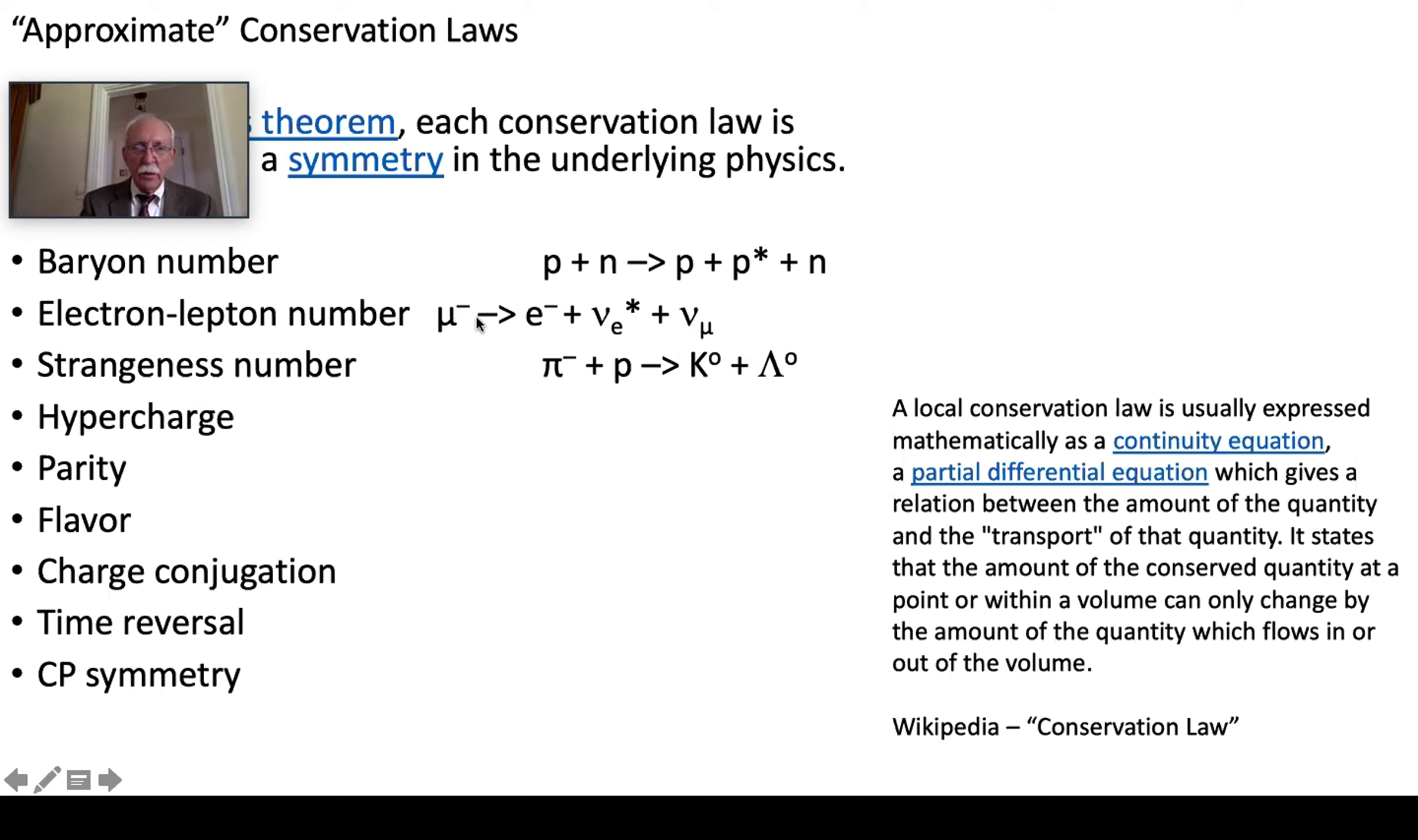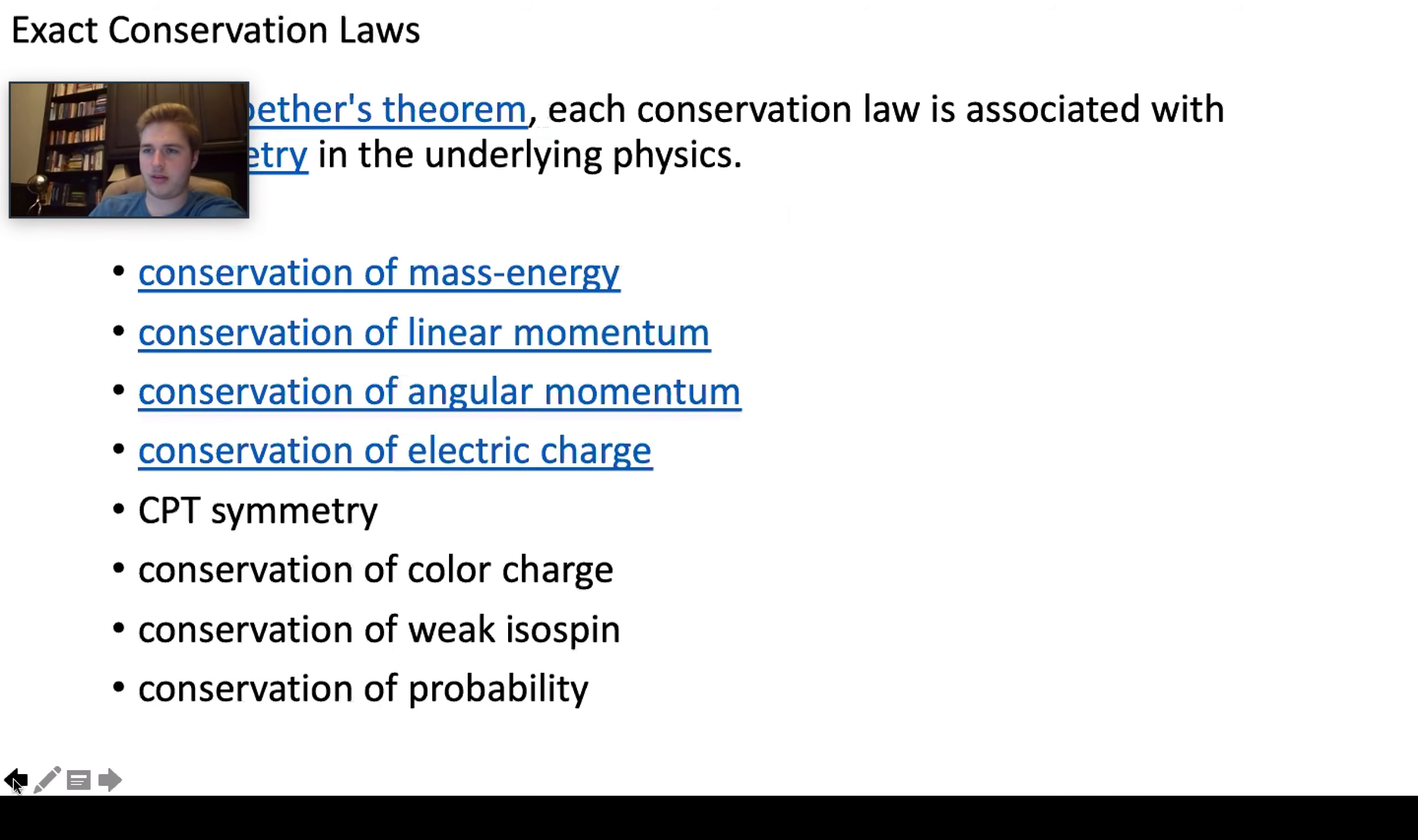How about this one? Mu minus goes to an E minus plus an anti-electron neutrino and a muon neutrino. Muon what's the muon neutrino? Is it negative one? The antiparticles are always the negative and the particles themselves are positive. No it wouldn't be. No way it would because there's a negative and a positive so that cancels. So yeah it would be conserved. The charge would be.